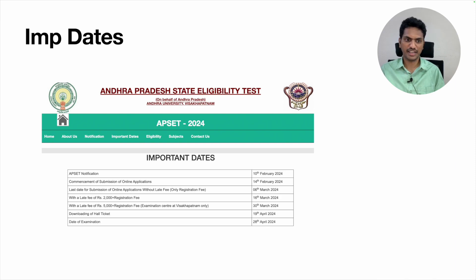These are the important dates. Notification - February 10th, already notification given. Online application you start applying from 14th of February. Last date for online application - see the last date - 6th March. With fine of 2000 rupees it is 16th March, and with fine of 5000 rupees the last registration fee is 30th March. Downloading hall ticket - April 19th, only 10 days before the exam they are giving us the hall tickets. Date of exam - this is so important, remember this date - 28th April.